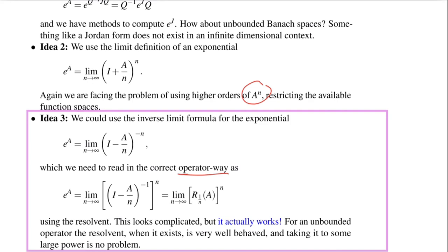It turns out that the resolvent is actually a very good operator. So if A is unbounded, the inverse, the resolvent is actually a nice operator and taking this to the power of n is often not a problem at all. So this actually will work. So from the three ideas we had so far, this idea using the inverse limit for the exponential function actually will work. And this will be the main result of the Hille-Yosida theorem, which we prove much later.